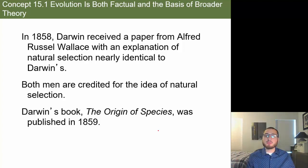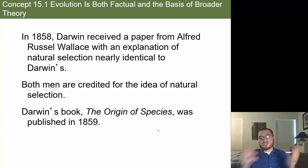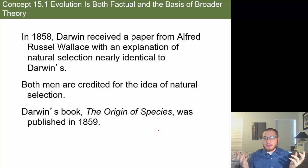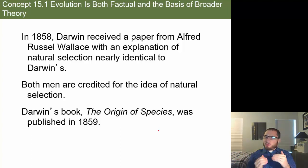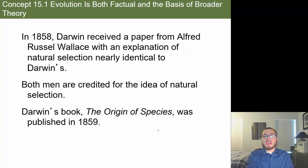Darwin had far more evidence than Wallace, so they agreed to collaborate. Darwin then published 'The Origin of Species,' covering descent with modification, evolution, and natural selection. Alfred Russell Wallace is rarely talked about — Charles Darwin stole the spotlight — but both are technically credited with the idea of natural selection. Darwin ultimately saved his ideas by working with Wallace.